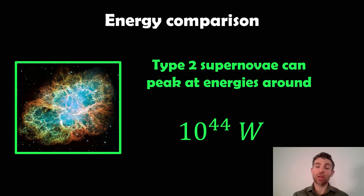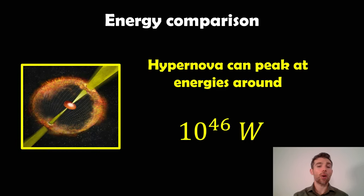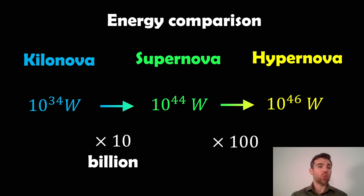Hypernovas have about 100 times more energy involved here. These can peak at around 10 to the 46 watts. So comparing all of those together, we've got a kilonova, and then a supernova might be 10 billion times more than a kilonova. Your hypernova then could be a hundred times more than a supernova. So we've got some significant energies involved here, and the step up from a kilonova to a supernova, or the top end of a supernova, is a big step.